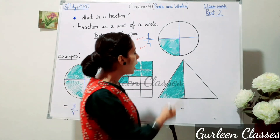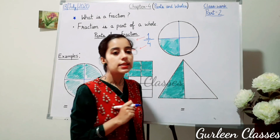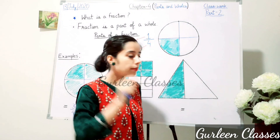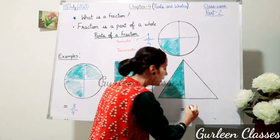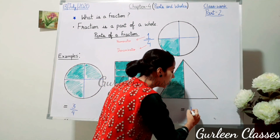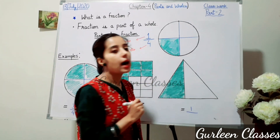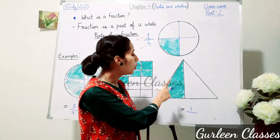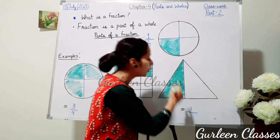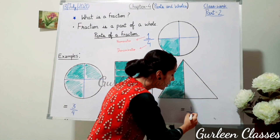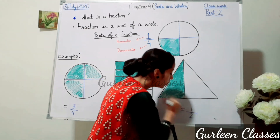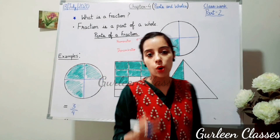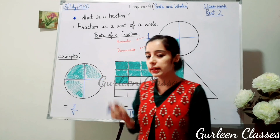Next, how many parts are shaded? 1. So write 1 in the numerator. And how many total parts are there? 2. Write 2. So students, I hope this is clear.